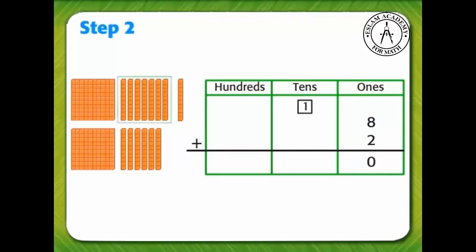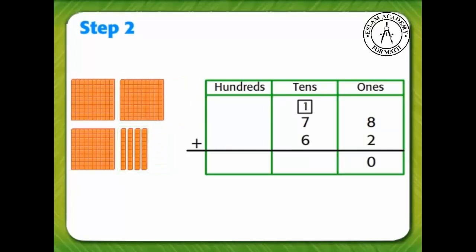Next, add 70 and 60. Then add the regrouped 10. There are now 14 tens, but we cannot write 14 in the tens place. Leave the 4 in the tens place and move the 1 above the hundreds.